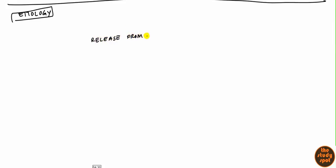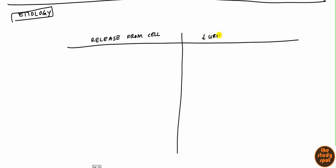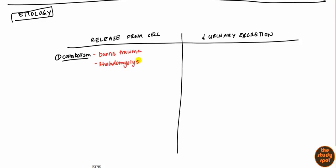There are two different types of causes of hyperkalemia: potassium released from the cell, or decreased urinary excretion. The first cause is catabolism, which can be caused by burns, trauma, rhabdomyolysis, or tumor lysis syndrome. In all of these conditions, you have catabolism or breakdown of the cell, so all the potassium that was inside the cell gets released into the blood, causing hyperkalemia.